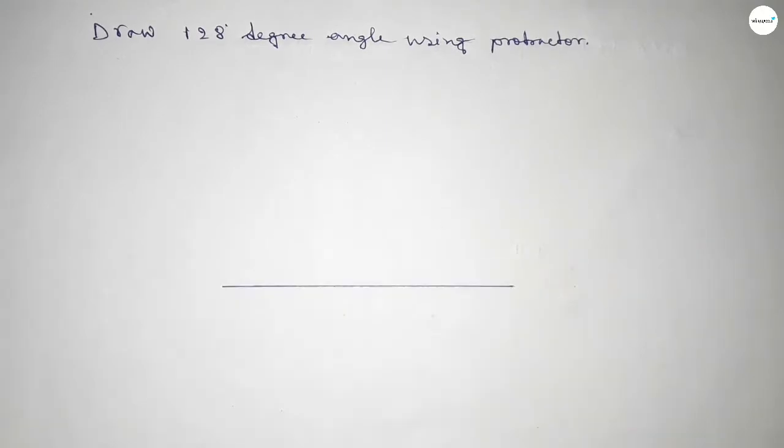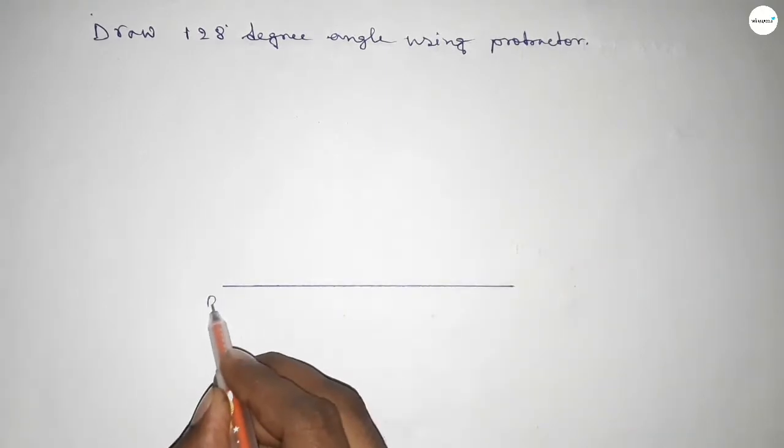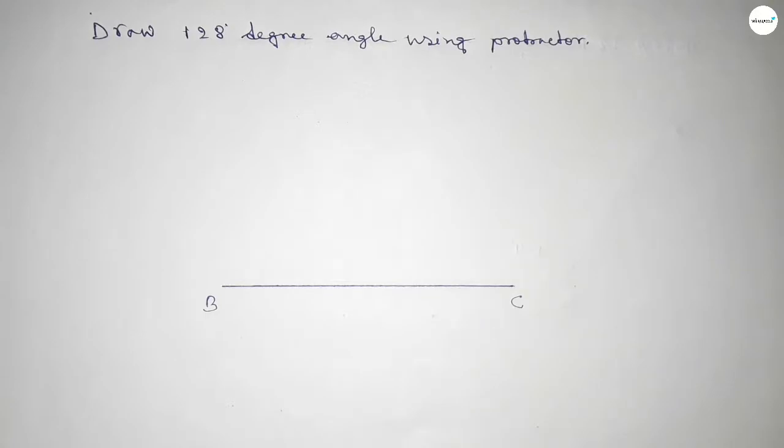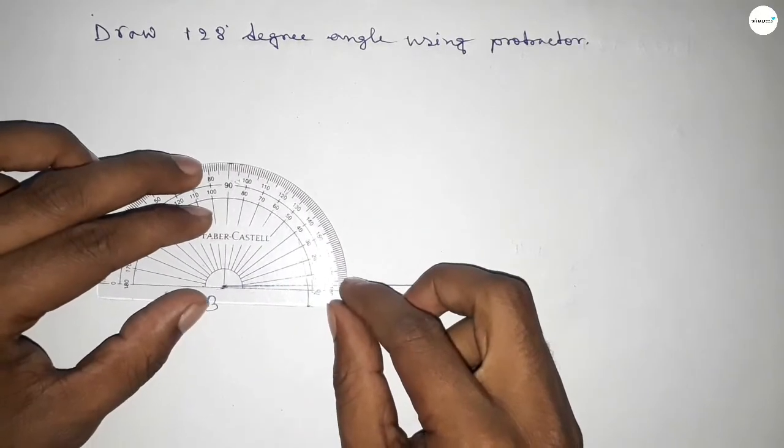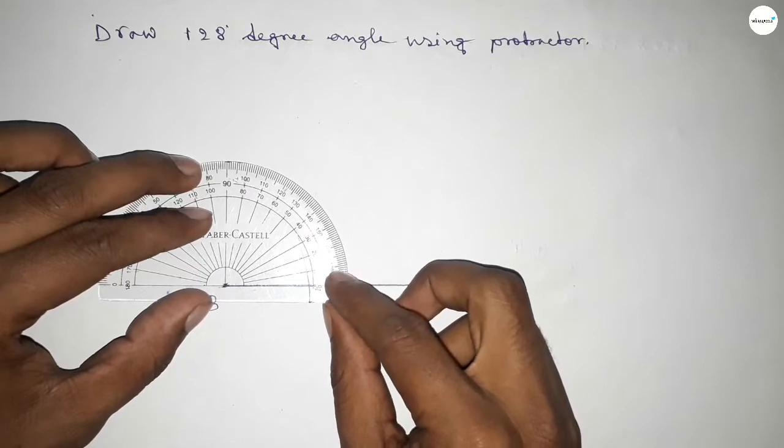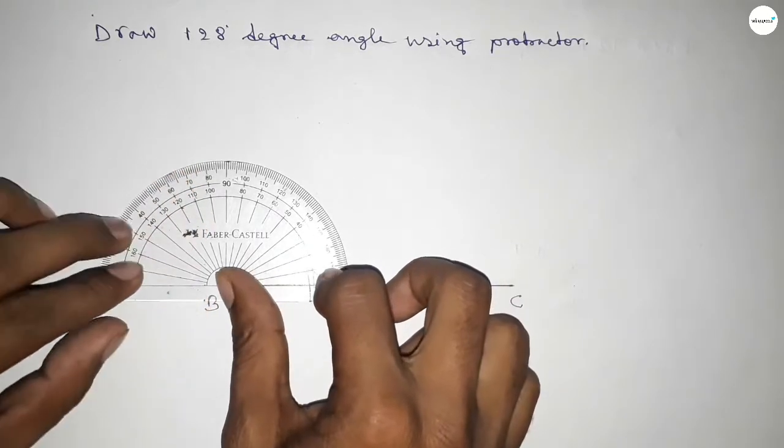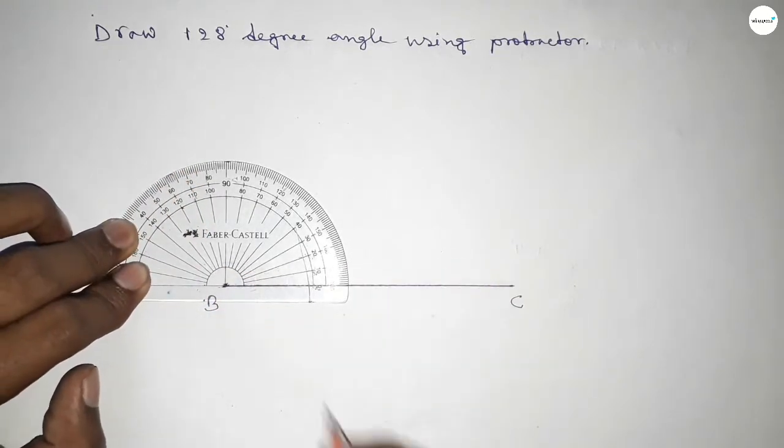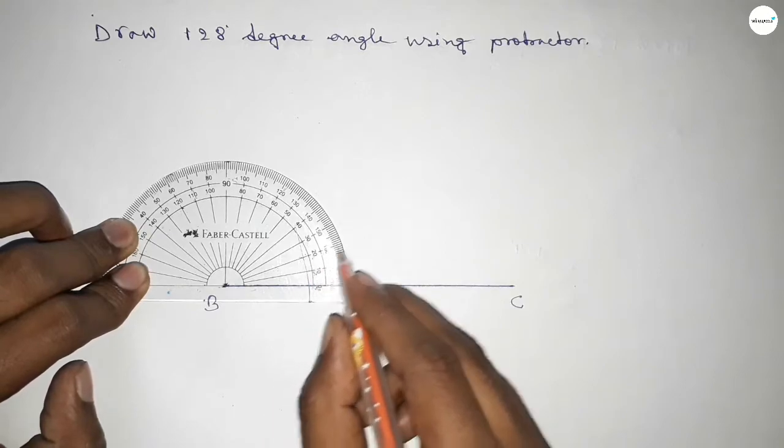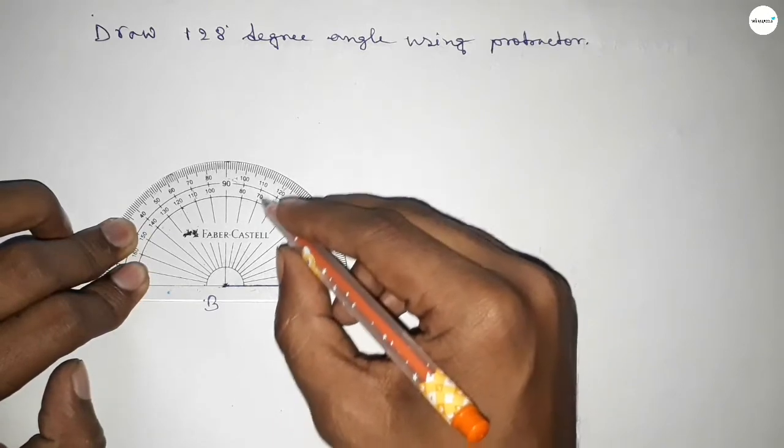First, drawing a line here. Next, taking point B and point C here. Now putting the protractor on point B perfectly, then counting the angles. So now this is the starting angle: 0, 10, 20, 30, 40, 50, 60.